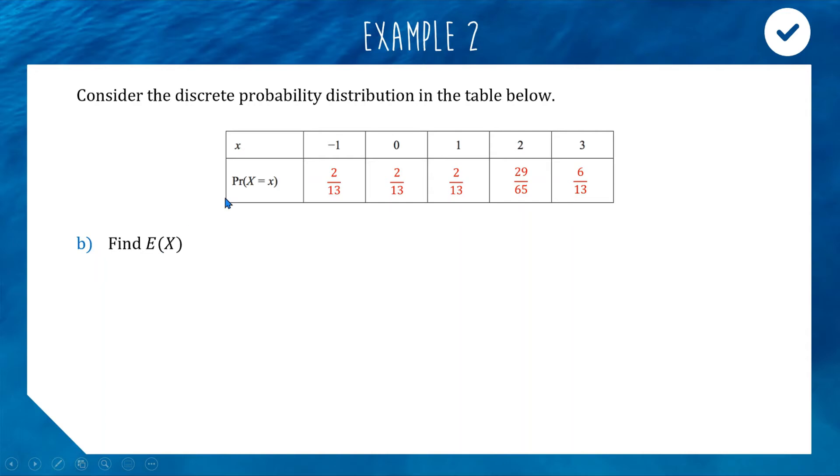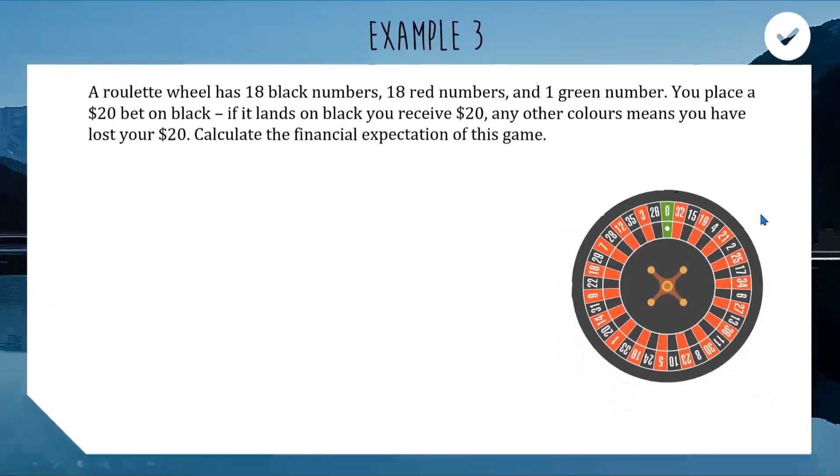Now we know the value of b, we can calculate our five probabilities to find our expected value. I'll take my table and wherever I see a b, I'll replace it with 2 out of 13. Now for our expected value, all our outcomes are multiplied by their probabilities and we add the results: negative 1 times 2/13, 0 times 2/13, 1 times 2/13, 2 times 29/65, and 3 times 6/13. Adding these together gives us an expected value of approximately 2.277.